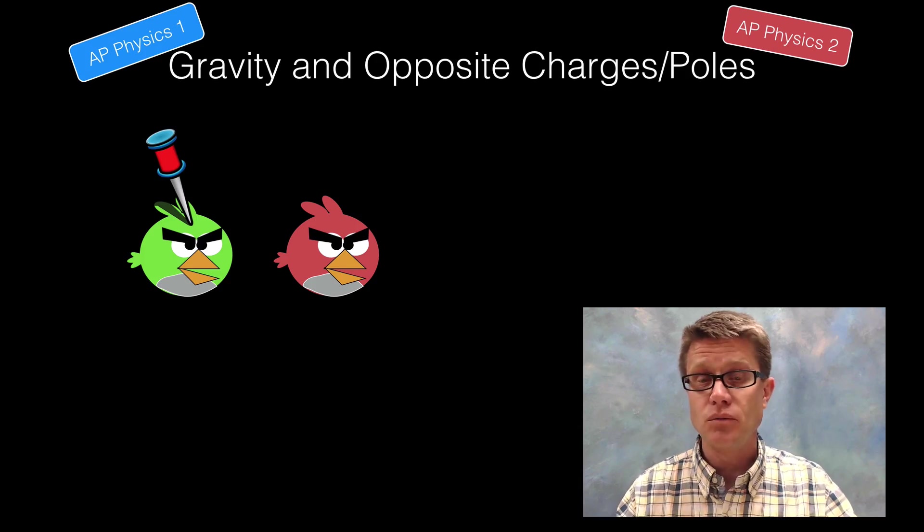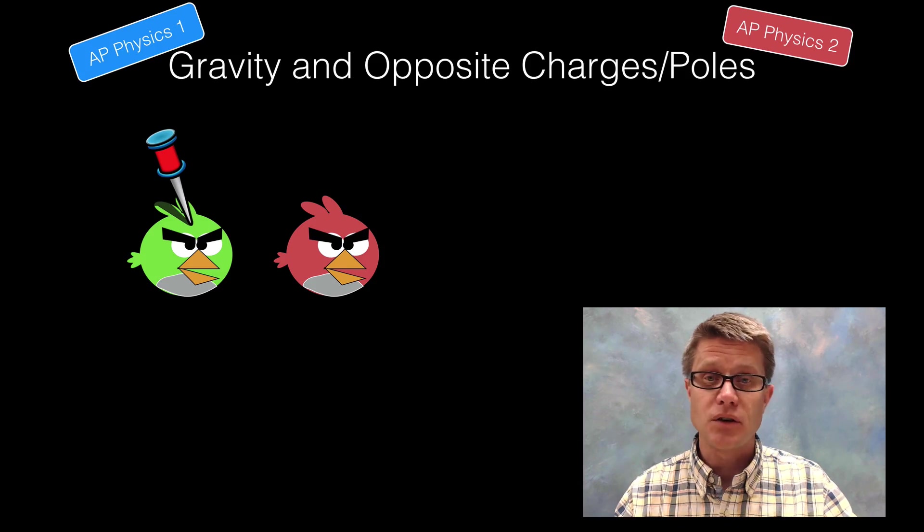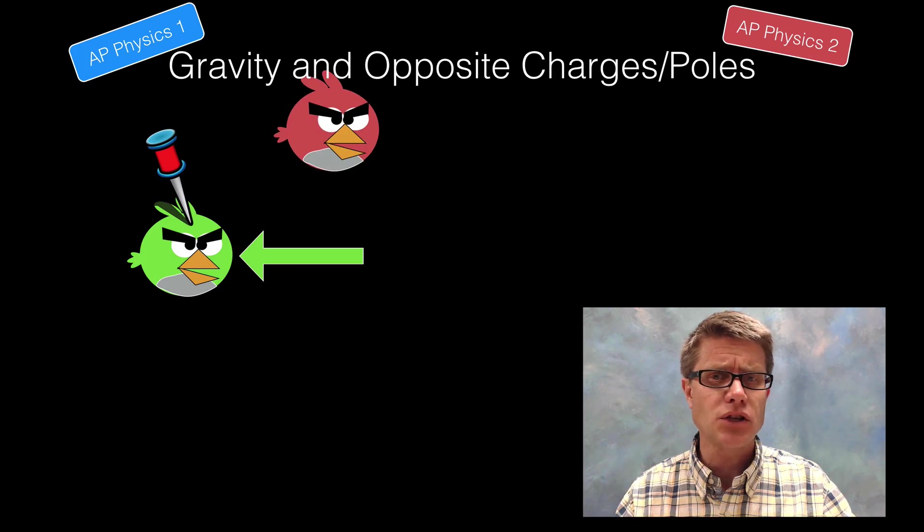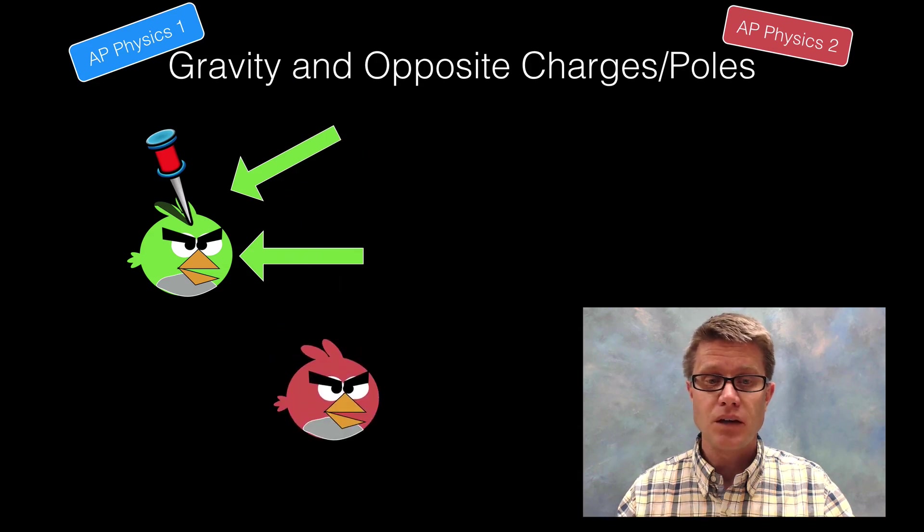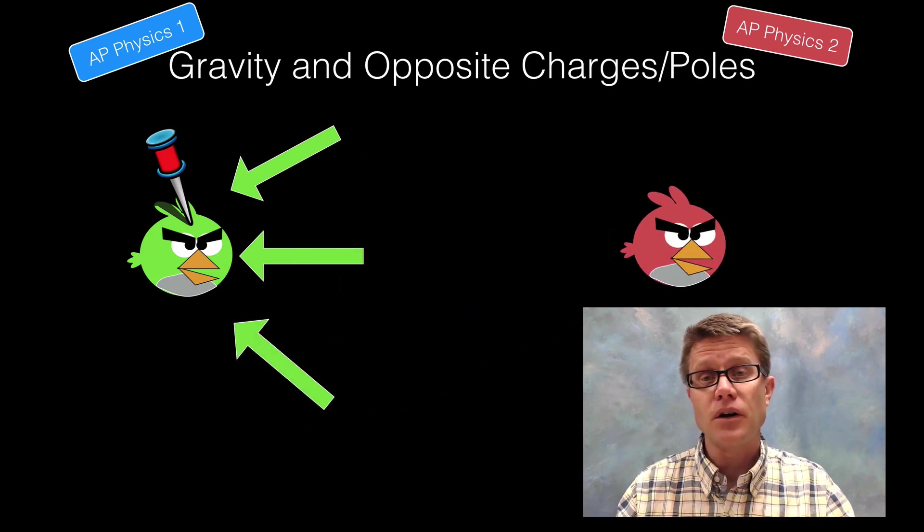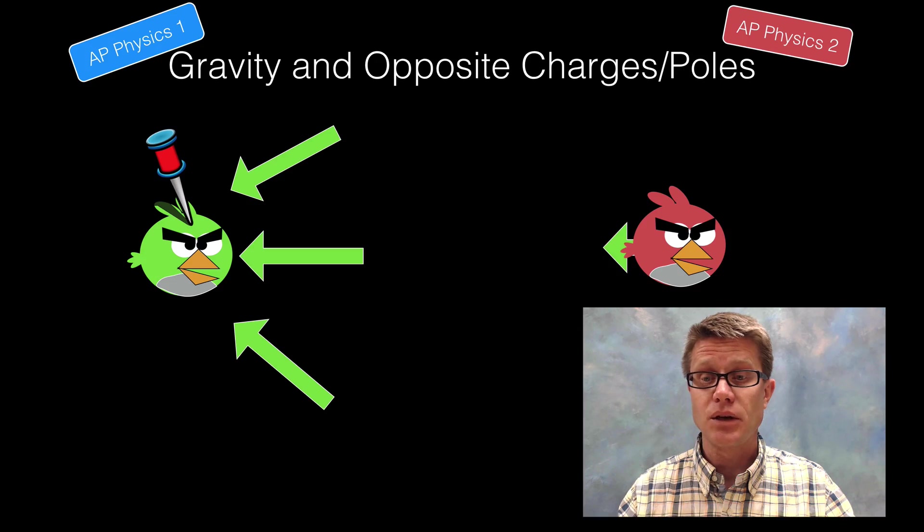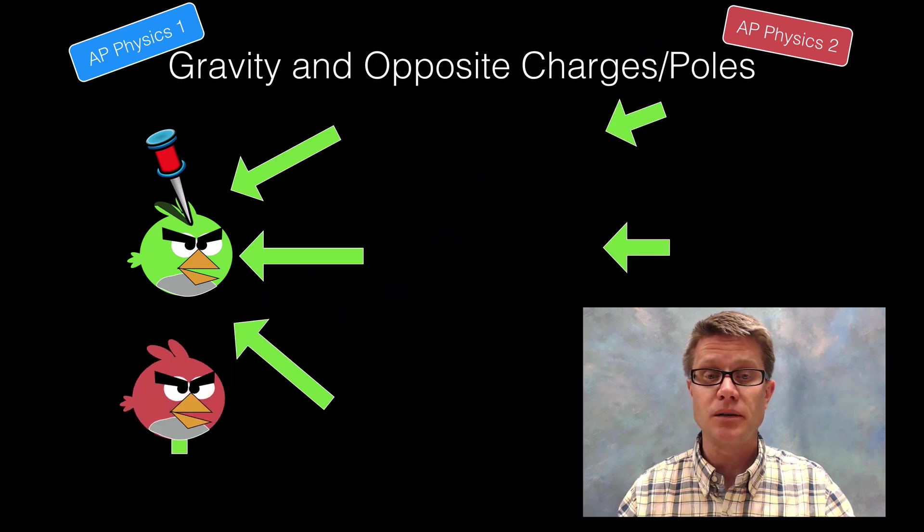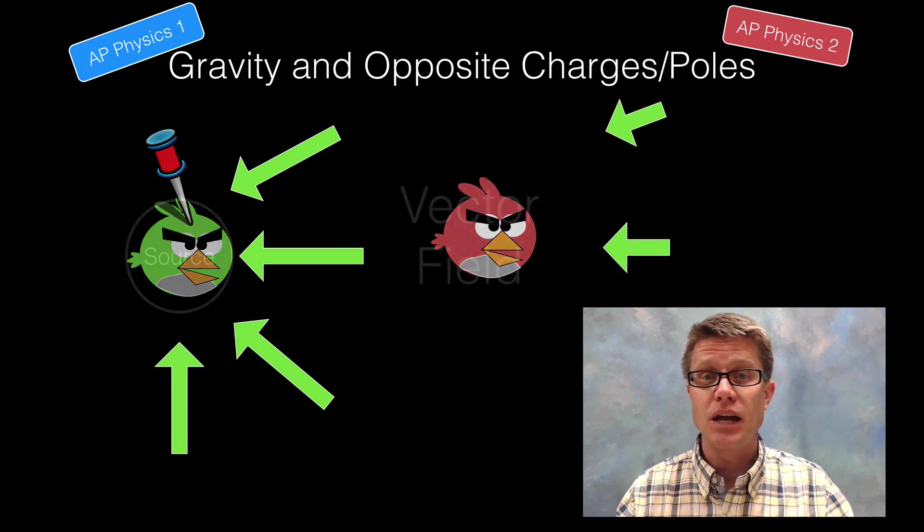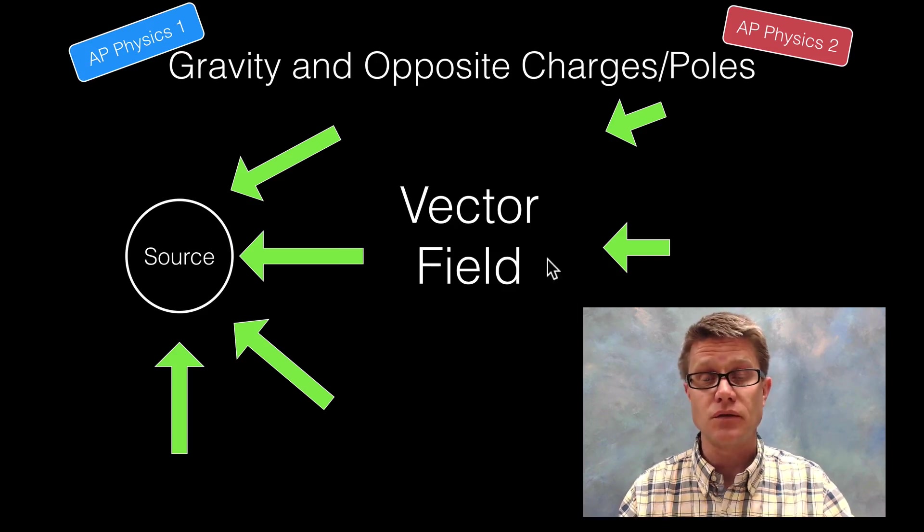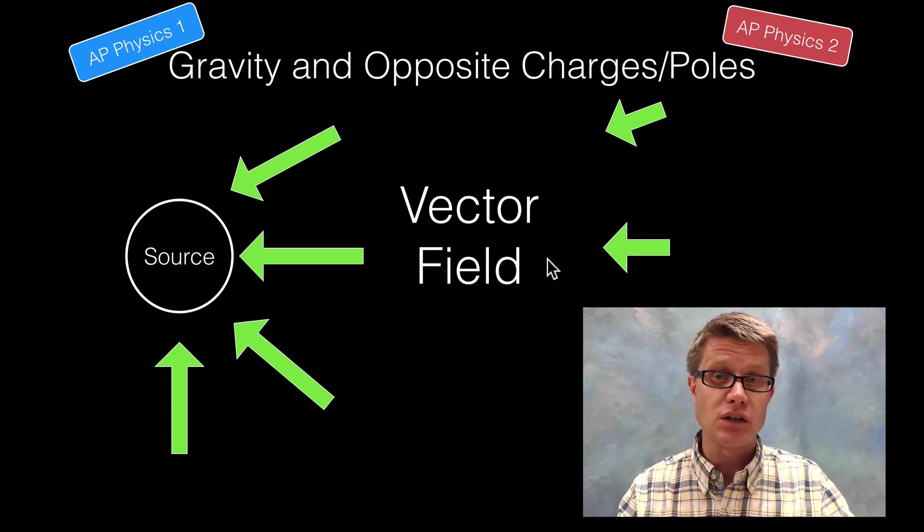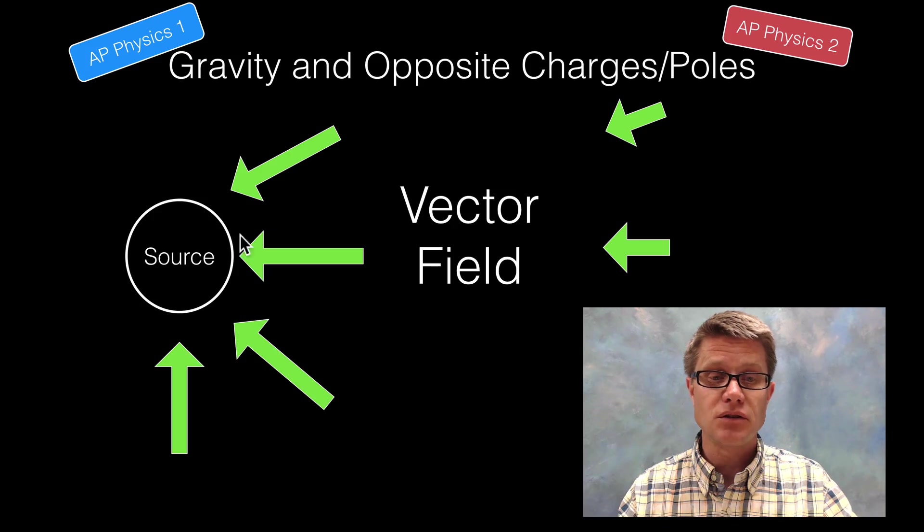If we take that angry bird, it's going to be attracted to the first one. We could represent that attraction with an arrow. We can then move its location and there's also going to be attraction here, but at a different angle. As we move it farther away that attraction is going to be less. We could map those out here as well. Now we have created a vector field. We have the source here in the middle, and then all these arrows represent the vector field, not only the magnitude but the direction in which that force is pointing. All of them are pointing to the source.